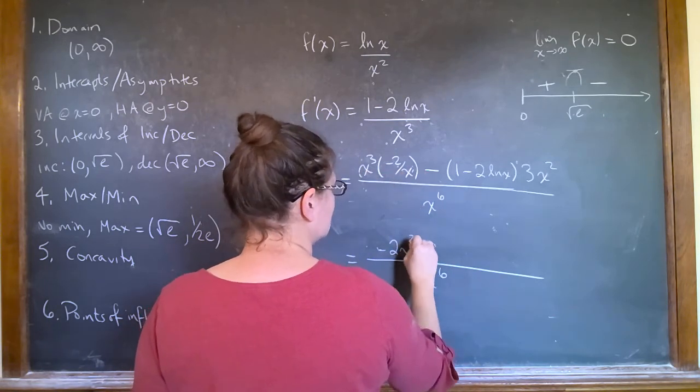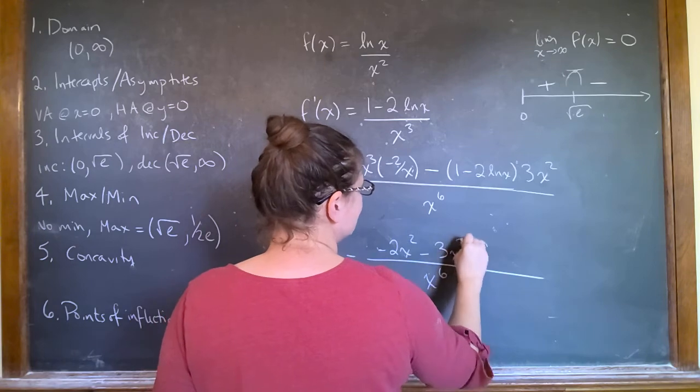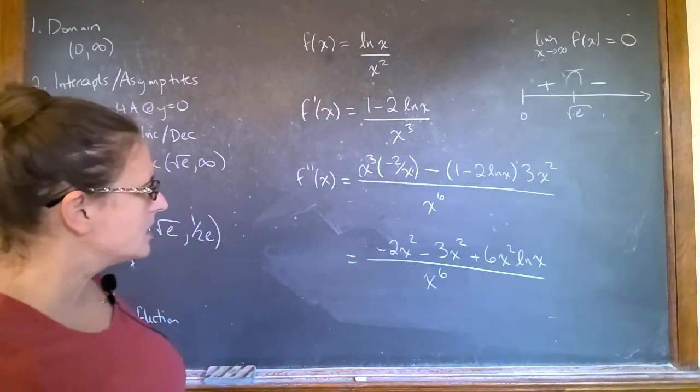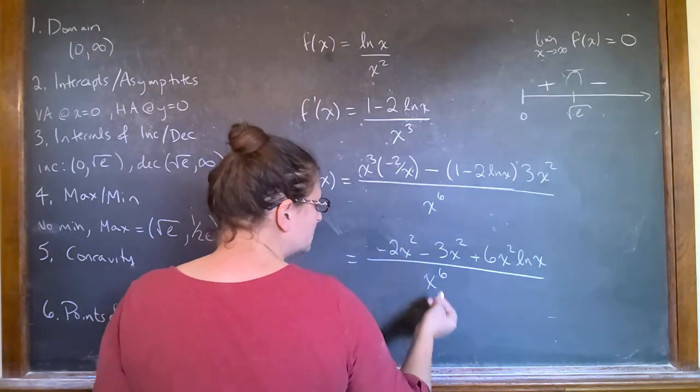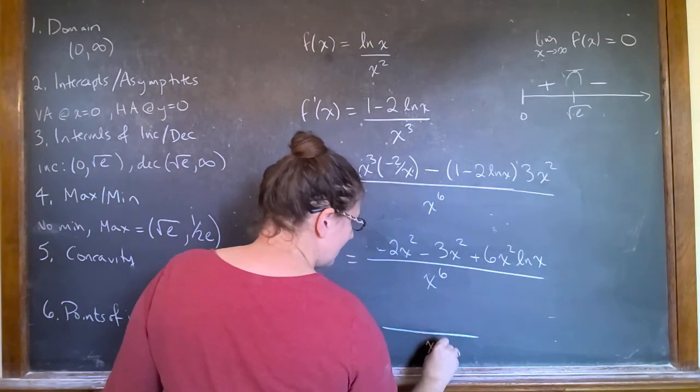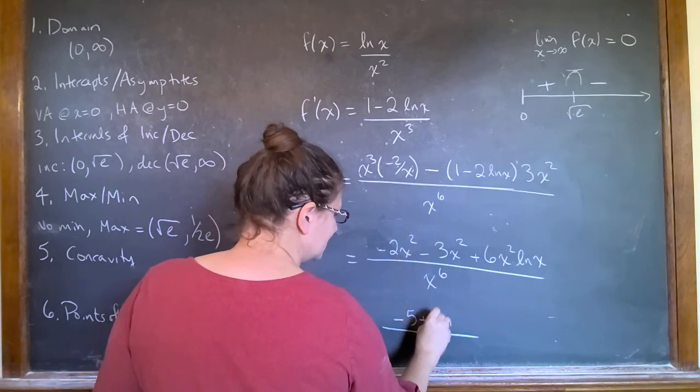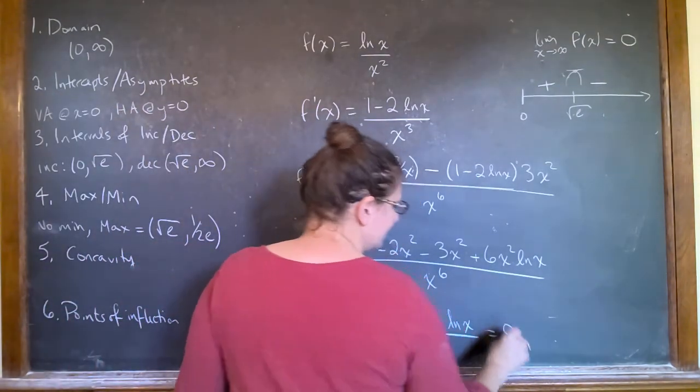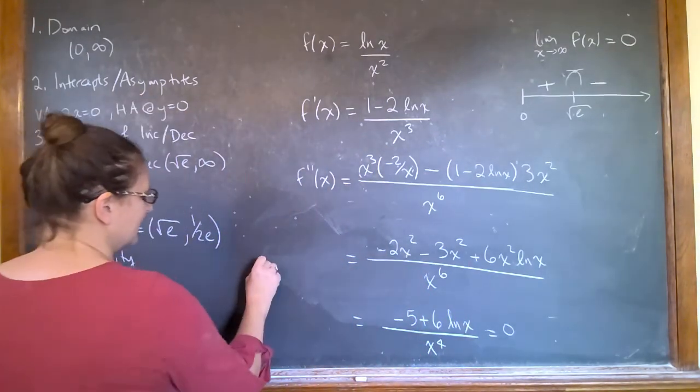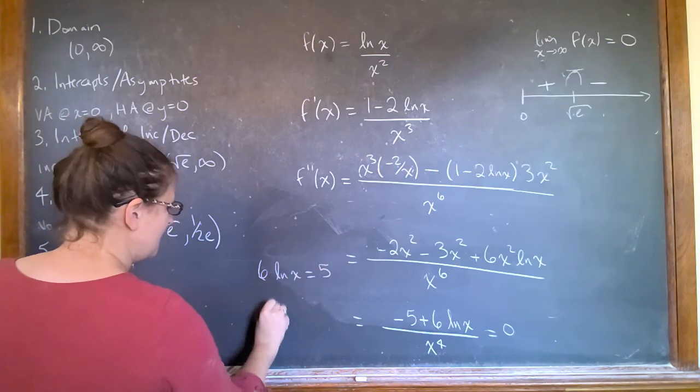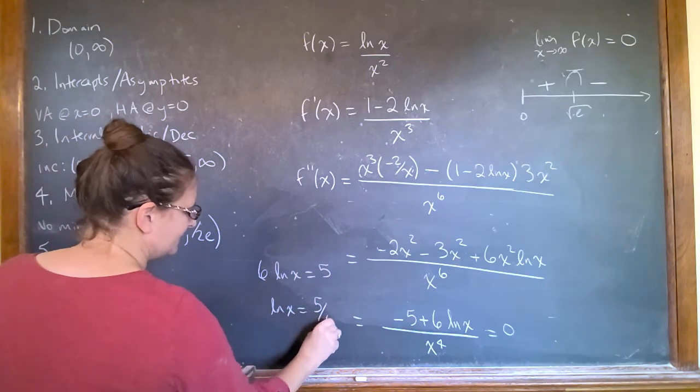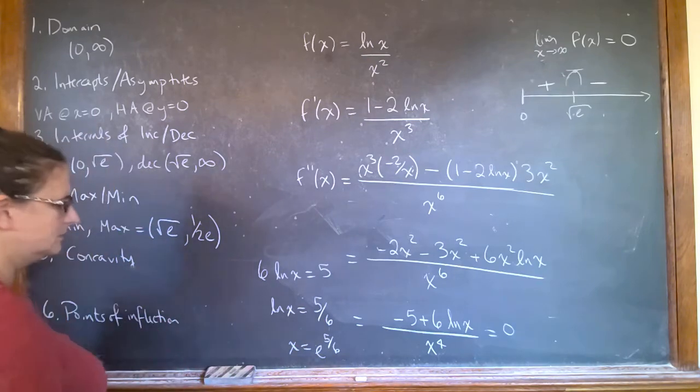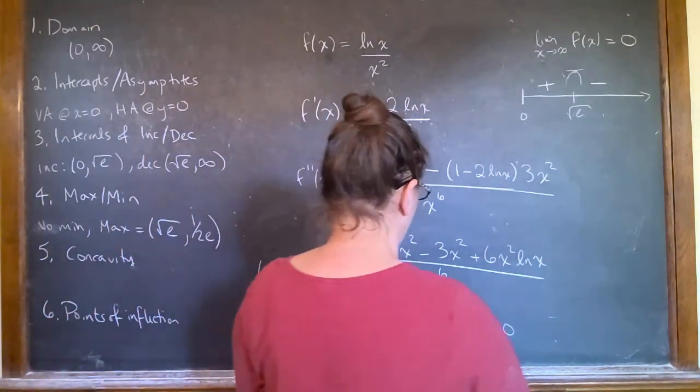So cleaning this up. This would be minus two x squared minus three x squared plus six x squared natural log of x. So the x squared would cancel out. So I have x to the fourth here. And I would have minus five plus six natural log of x. That looks good. When I'm going to figure out this is zero here, I'm going to have six natural log of x is five. Natural log of x is five sixths. So x is going to be e to the five sixths.